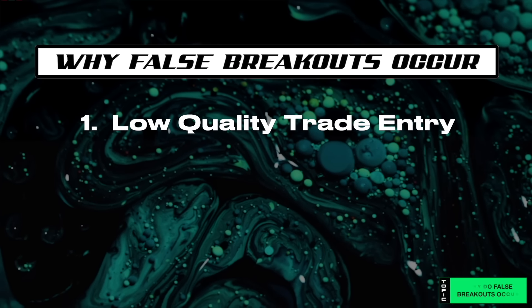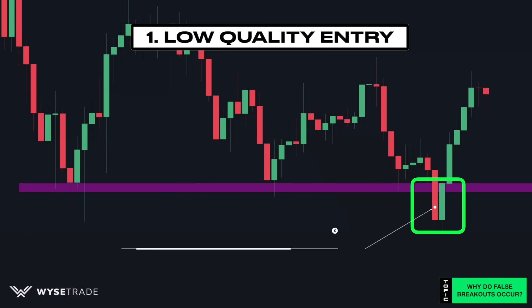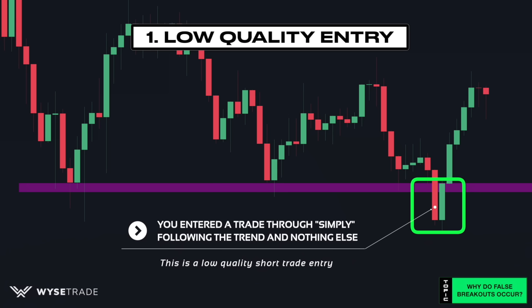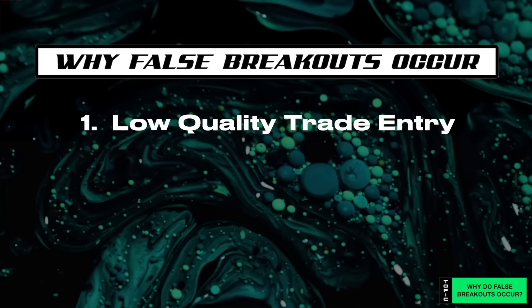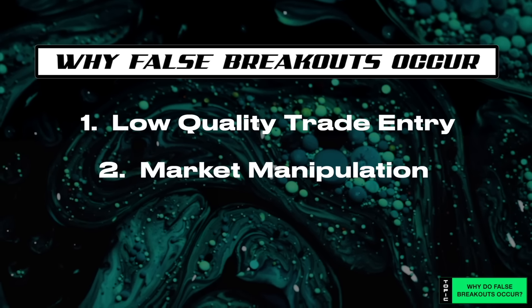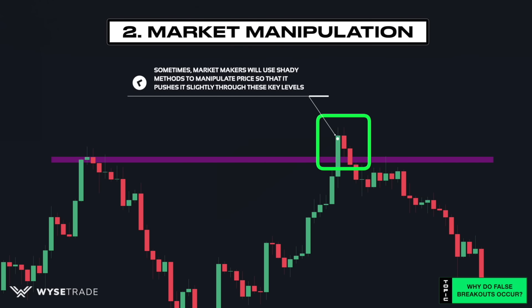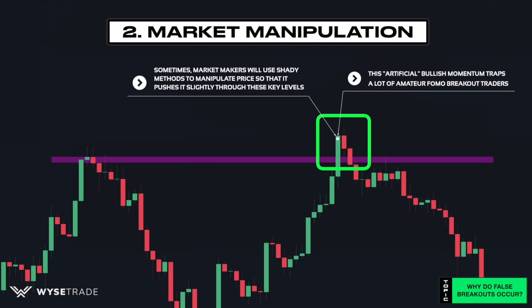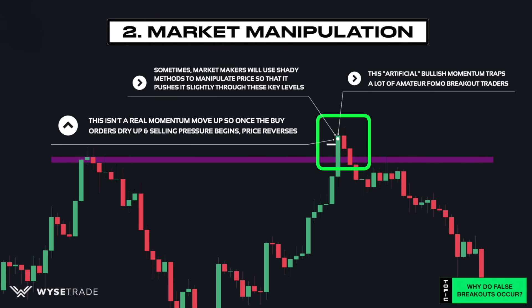This occurs because of three reasons. First, you entered through a simple trend following strategy with nothing else, which is a low quality trade entry. Second, sometimes market makers will use shady methods to manipulate price so that it pushes slightly through these key levels, which traps amateur FOMO breakout traders. Because this isn't a real momentum move up, once those buy orders dry up, selling pressure begins and price reverses.